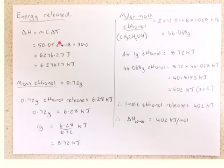So we had 50.05 grams times 4.18, which is the heat capacity of water, times our change in temperature, which is 30 degrees. So we end up with 6276.27 joules, or 6.8 kilojoules.